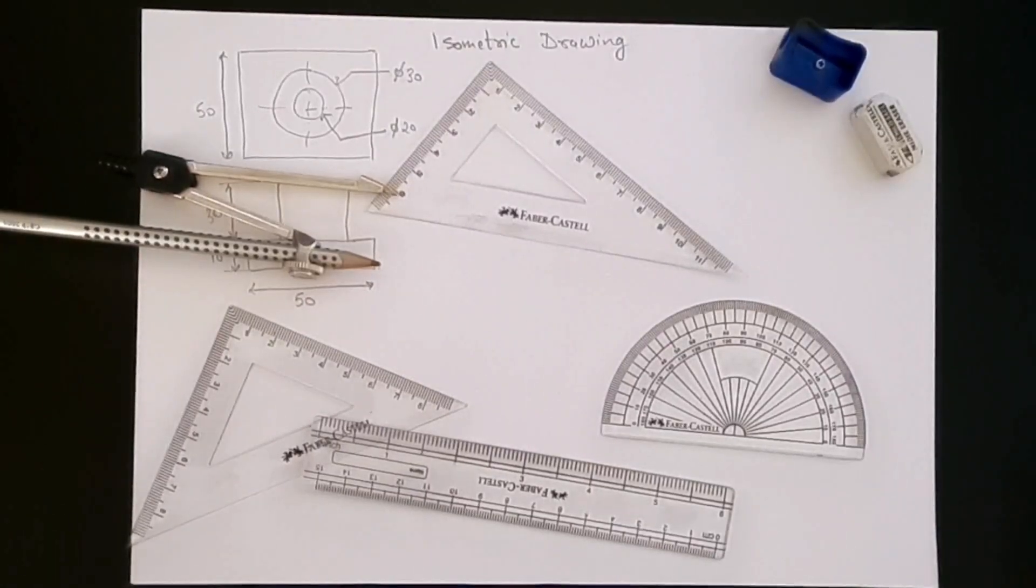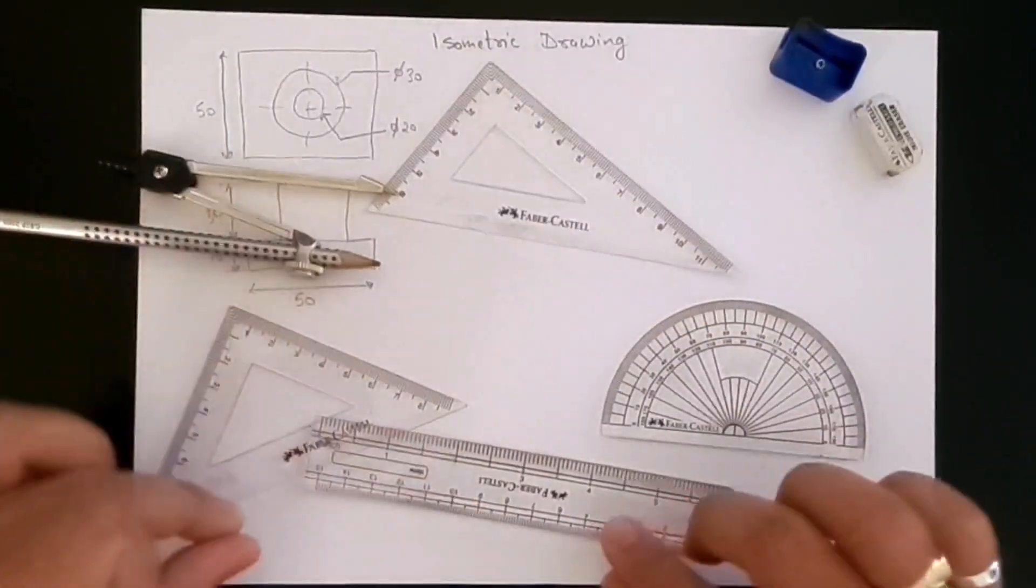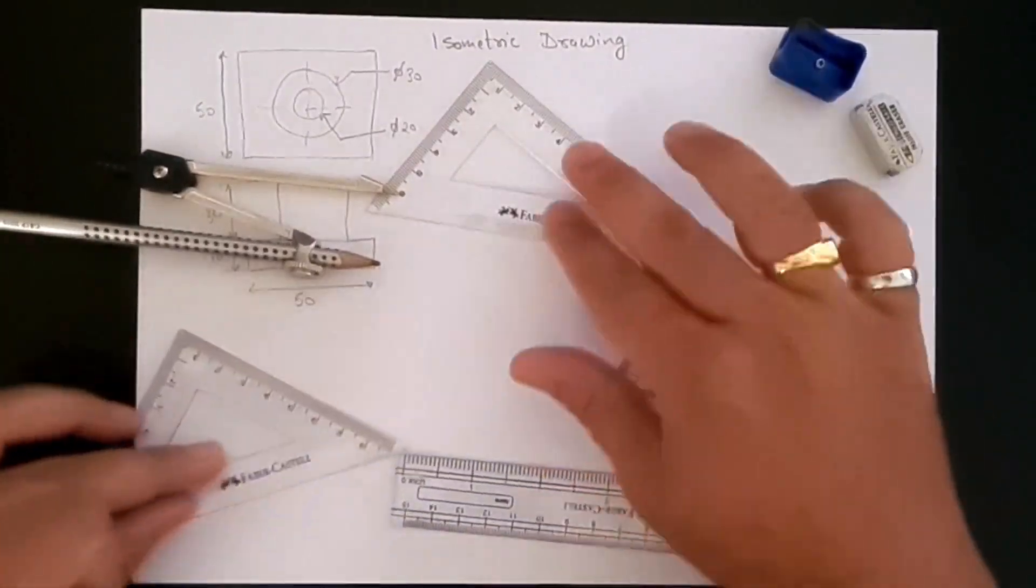Hello and welcome to this video series where we create isometric drawings. Now we are using standard tools like a pencil, scale or ruler, set squares.